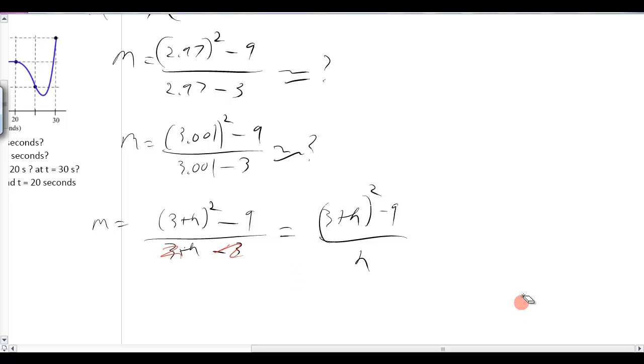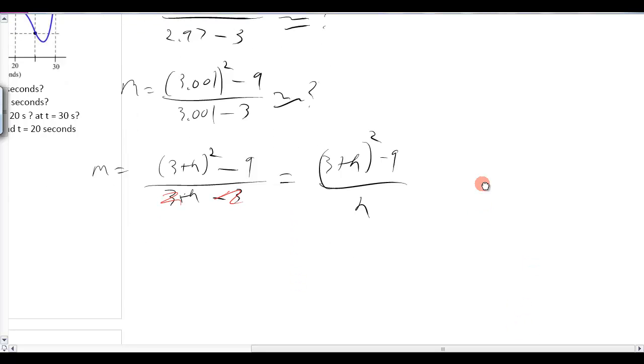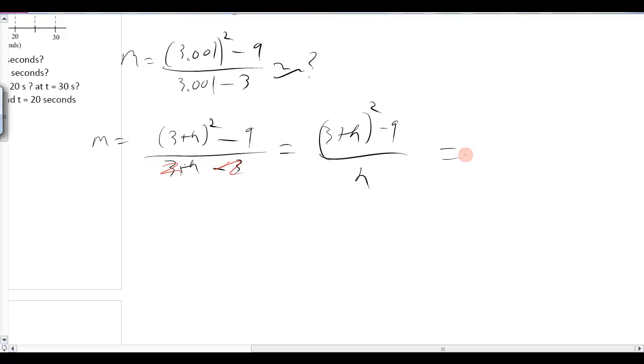So it's (3 plus h) squared minus 9, divided by 3 plus h minus 3. And those 3's are going to subtract, leaving it with just h in the denominator. And we are pretty familiar with this now. Now we want to try and simplify as much as we can. So we square that through. So that would be 9 plus 6h plus h squared minus 9, divided by h. Those subtract, leaving us with 6h plus h squared. Factor out the h, leaving us with 6 plus h.